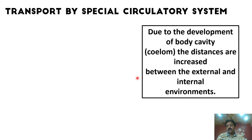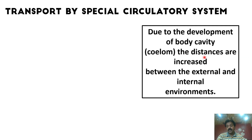In some animals there is no body cavity coelom, such as Planaria which belongs to phylum Platyhelminthes — we call it acoelomate. But in more complex animals, the mesoderm differentiates and breaks into two layers, and between them a body cavity called coelom is formed.